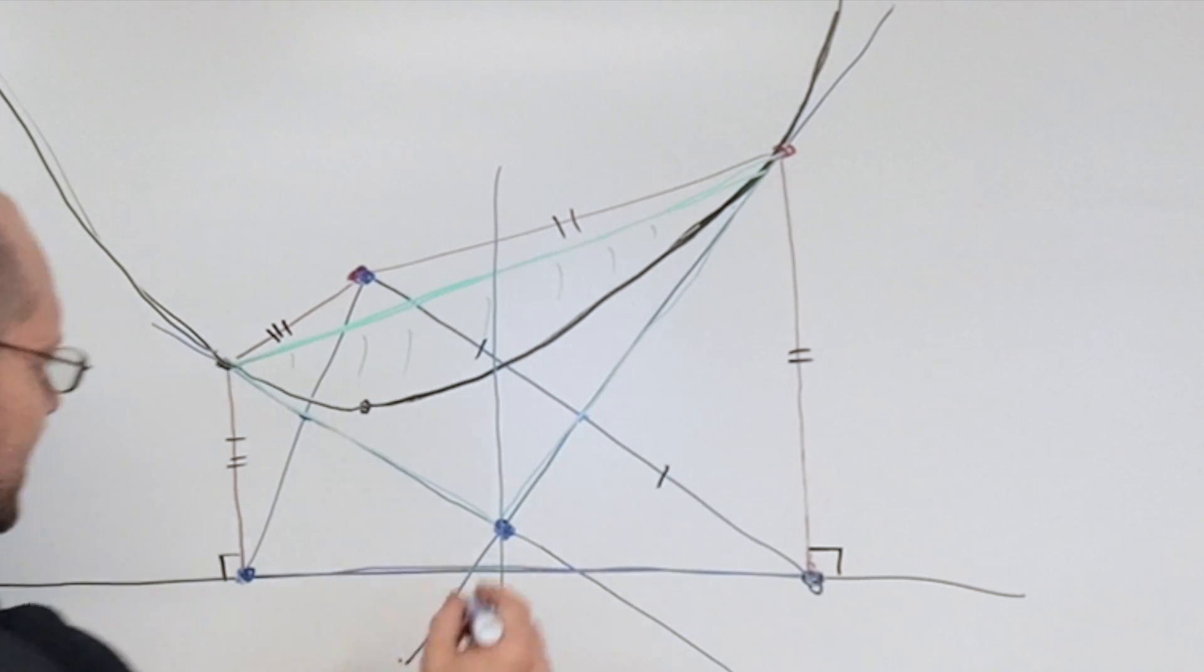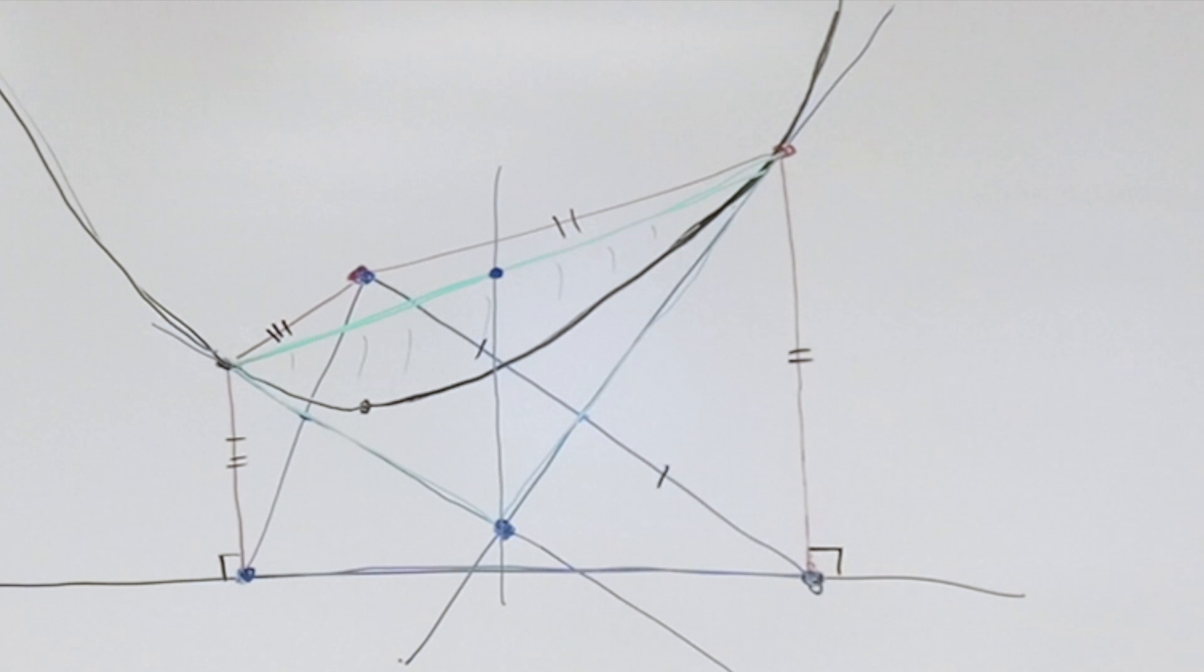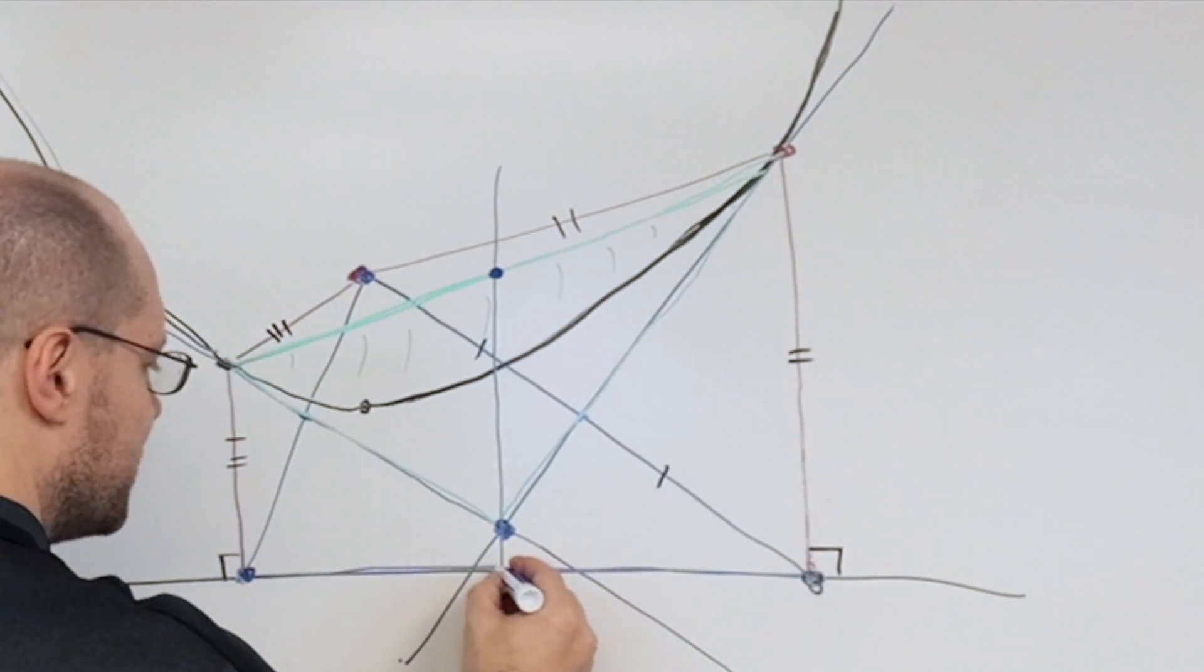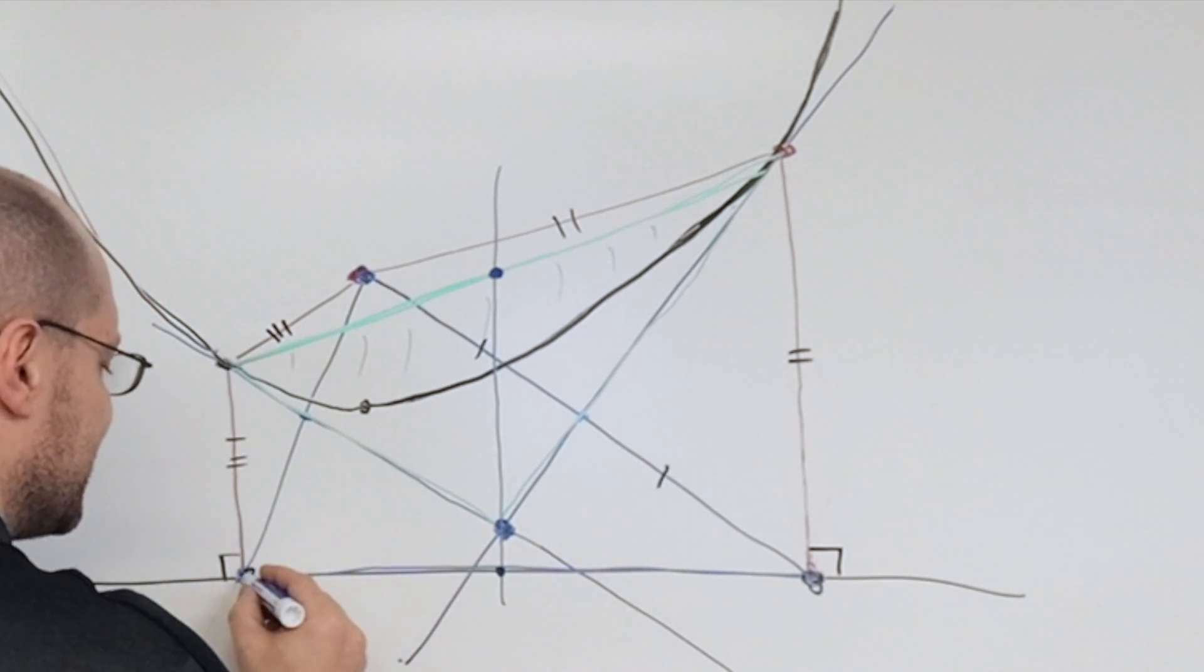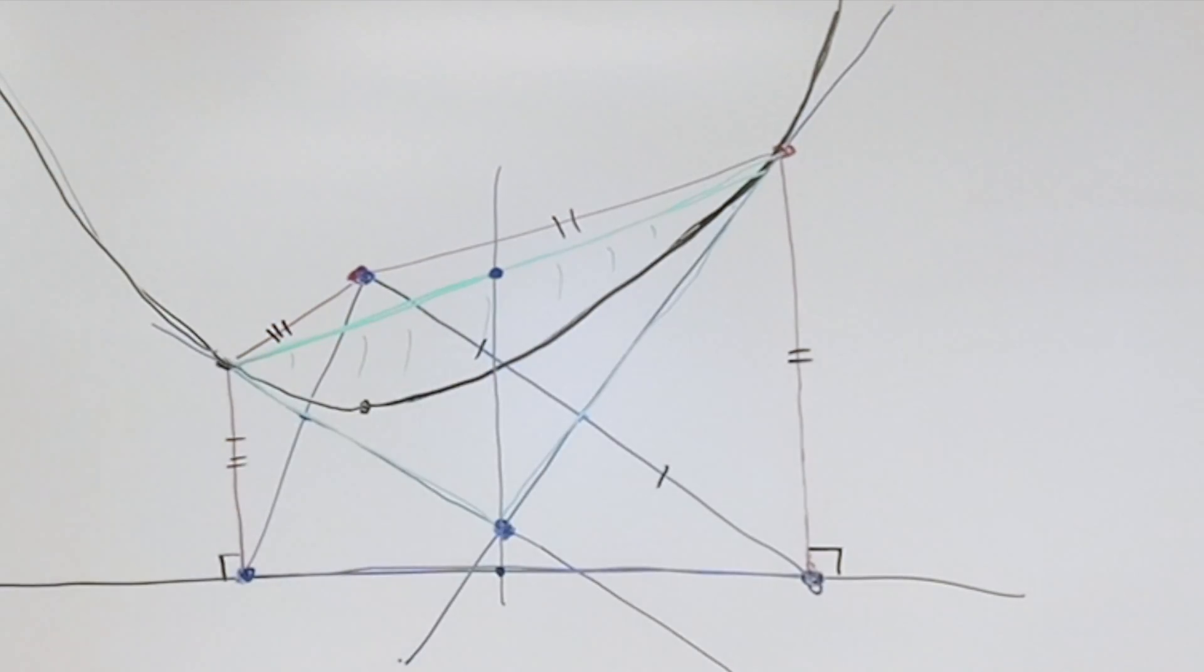And what does that mean? It means that where it intersects the chord that we're interested in, and where it intersects the directrix, it cuts this segment exactly in half, and it cuts the chord exactly in half. So we'll mark that. And that's the main takeaway that we need.